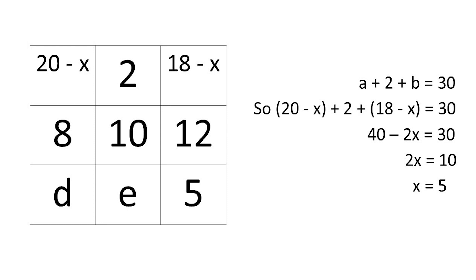The next part is more challenging, as we have to express other variables as equations involving X. By trying out all possible cases, we can get A equals 20 minus X and B equals 18 minus X, and then solve for X equals 5.